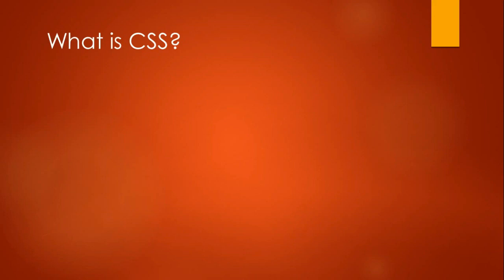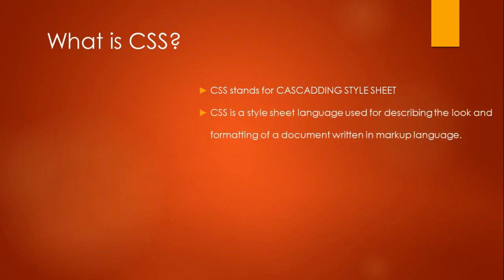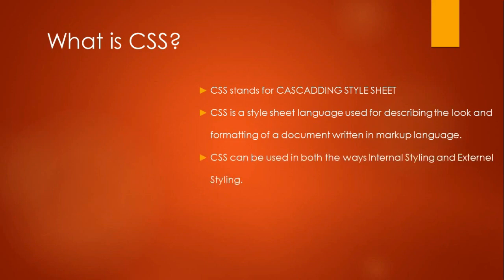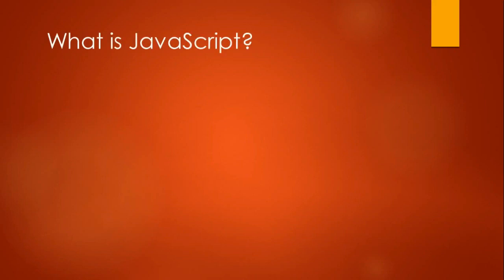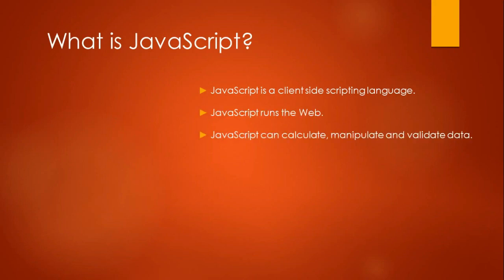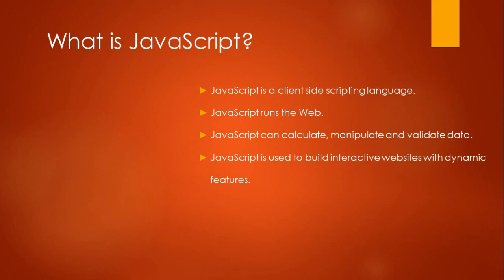CSS stands for Cascading Style Sheet. CSS is a style sheet language used for describing the look and formatting of a document written in a markup language like HTML. CSS can be used in two ways — internal styling and external styling — and we will be covering both. JavaScript is a client-side scripting language. JavaScript runs the web and can calculate, manipulate, and validate data. JavaScript is used to build interactive websites with dynamic features. If you want to make your website dynamic, you have to use a client-side scripting language, and the best one is JavaScript.